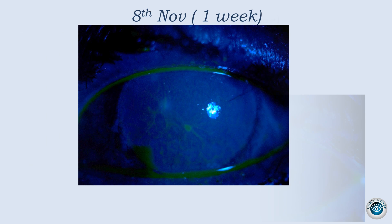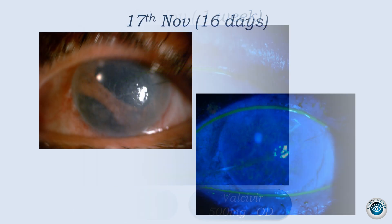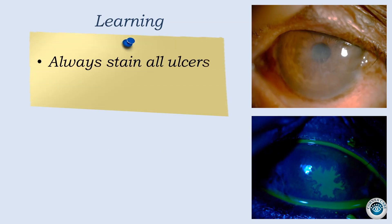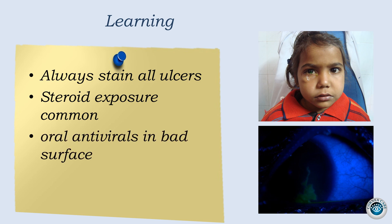The dose of antiviral was then reduced to a prophylactic dose, and antiviral was stopped on the 16th day. We must stain all epithelial defects and ulcers — we will be surprised to pick dendrite or geographic defect even when we never suspected them. This is particularly true in our scenario where patients are frequently given antibiotic-steroid combinations by RMPs or chemists. Oral is a good choice in cases of bad ocular surface.